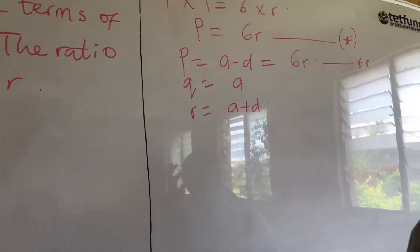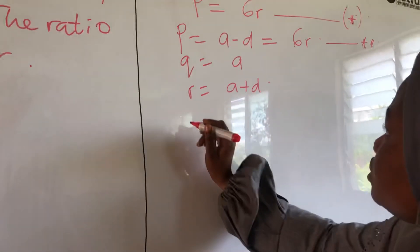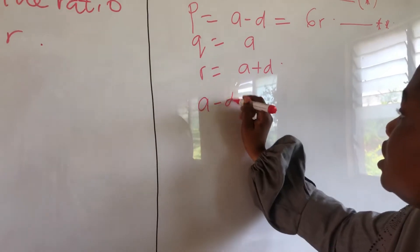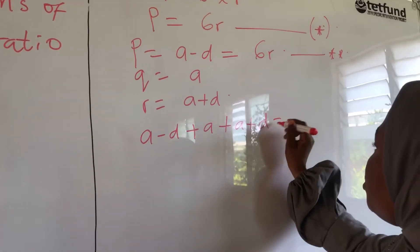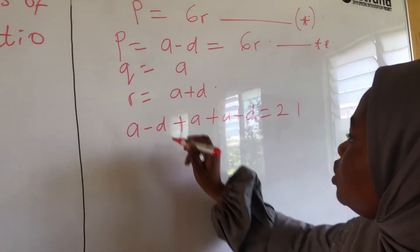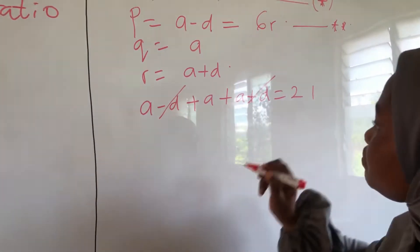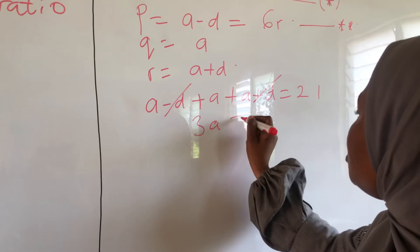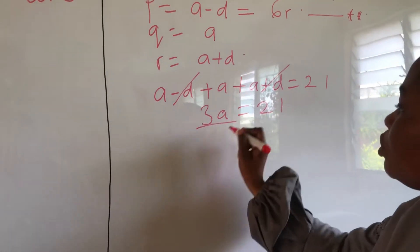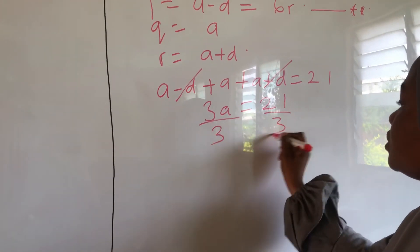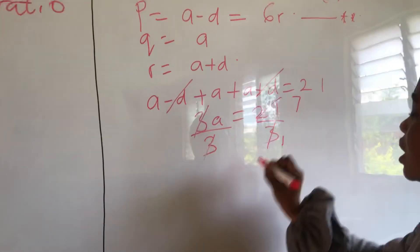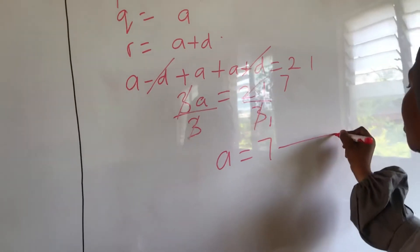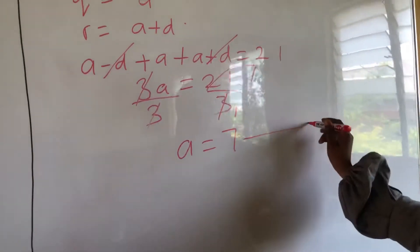So, from here, let's add this one together: A minus D plus A plus A plus D to be equal to 21. This negative D will cancel positive D. So, 3A is equal to 21. Divide both sides by 3. So, A is equal to 7. We have known this one, let's keep it aside.